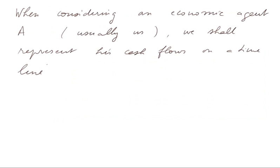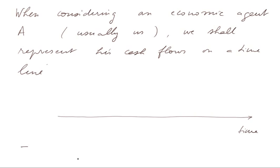When considering an economic agent A — usually us — we shall represent cash flows on a timeline. There will be arrows pointing either downwards for cash flows leaving us, or upwards for cash flows coming into our purse: minus for things pointing downwards and plus for things pointing upward. Typically, we shall have a cash flow today pointing downward — meaning we spend some money today — and receive money in the future at some dates, represented pointing upward.